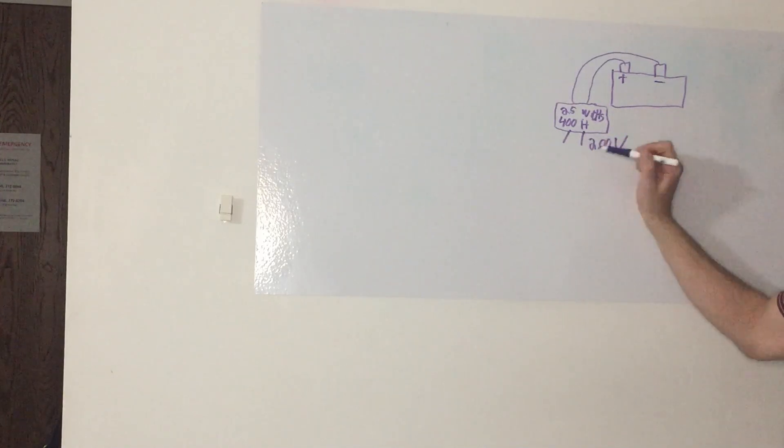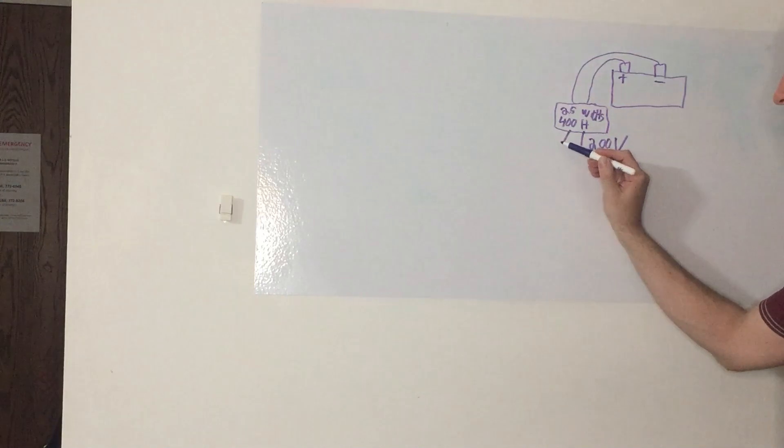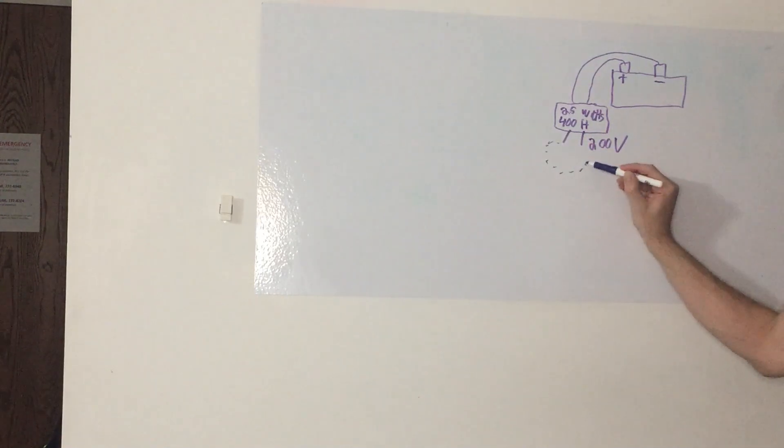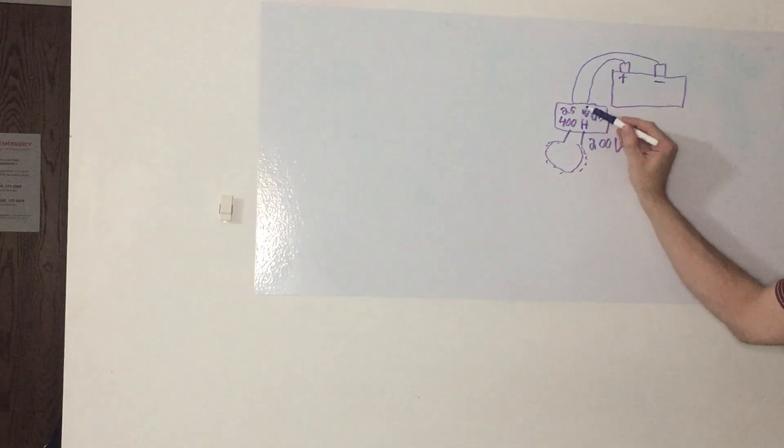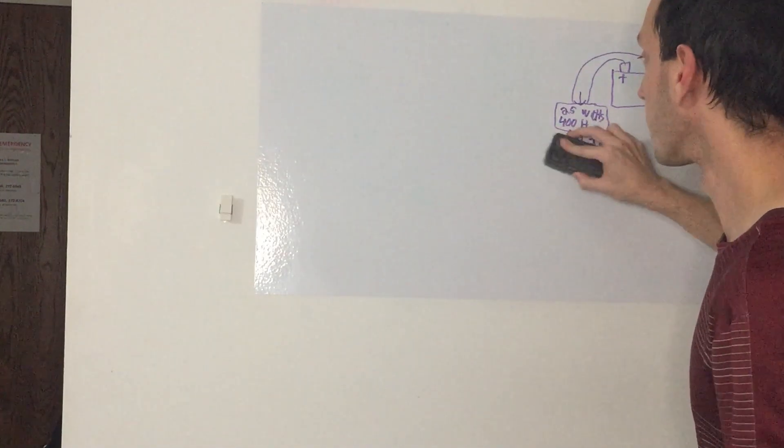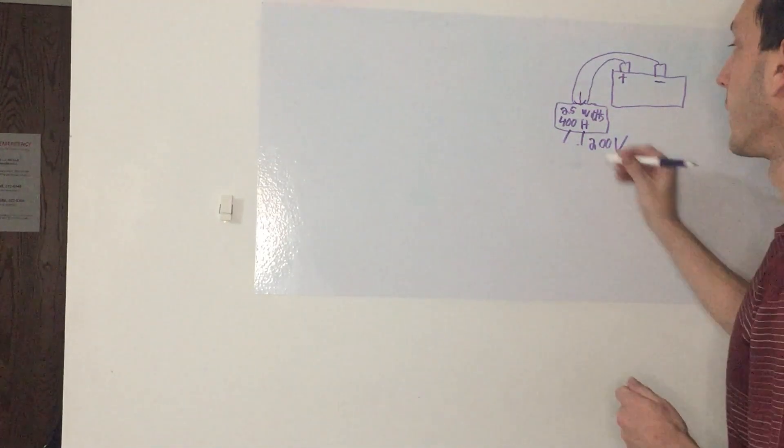According to our laws of physics, Lenz's law specifically, in order to load this we need to close the loop here. When we close the loop and create a load here, it creates a counter force which shows up as current which gets drawn in here. We don't want to do this.